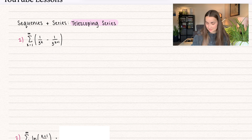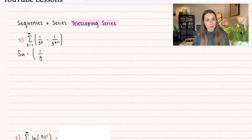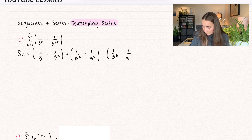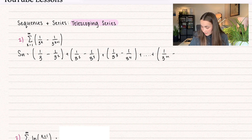The first thing we're going to do is take a partial sum. So let's say S_n is equal to: plugging in k equals 1 we get 1 over 3 to the power of 1, which is 1/3, minus 1 over 3 squared, plus when k equals 2: 1 over 3 squared minus 1 over 3 cubed. For k equals 3: 1 over 3 cubed minus 1 over 3 to the power of 4. And this goes all the way down to n, so we get 1 over 3 to the power of n minus 1 over 3 to the n plus 1.